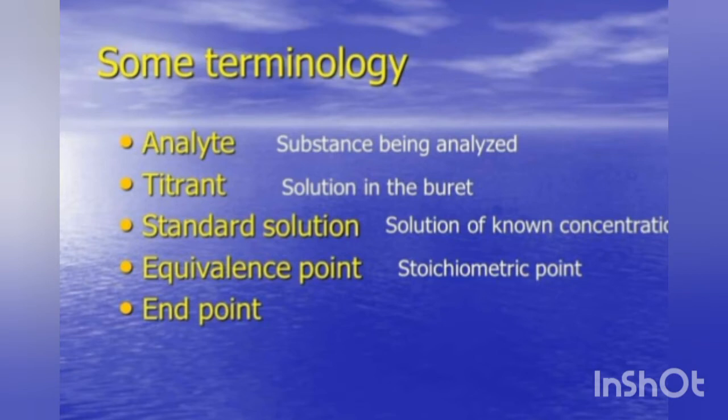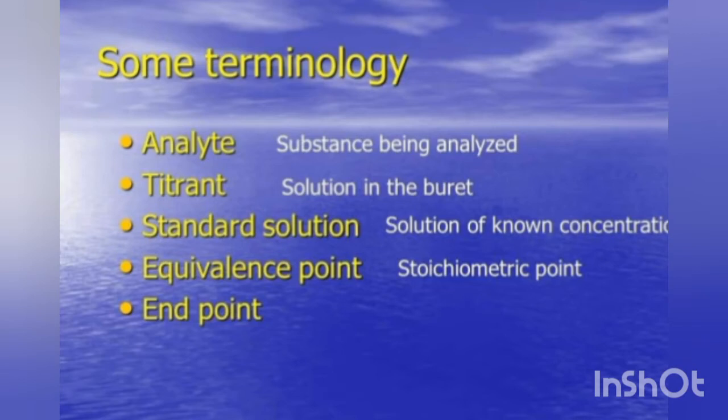Now we have some basic terminology. First, we have the analyte — the analyte is a substance that is being analyzed, which can be taken in a conical flask or Erlenmeyer flask. Secondly, we have the titrant — titrant is a solution which is taken in the burette. Next is standard solution — a solution of known strength. Sometimes we confuse standardized solution with standard solution; standardized solution means we have to find its strength by titrating it against a standard solution.